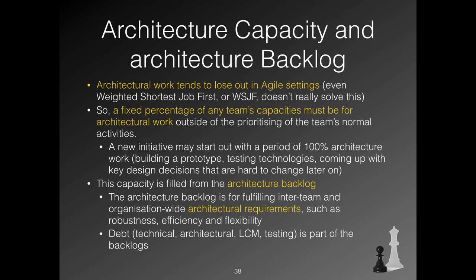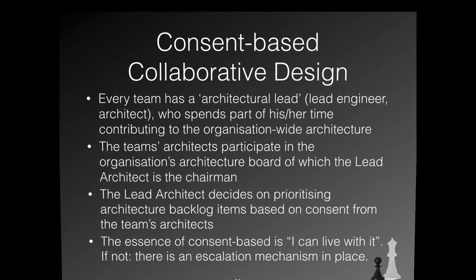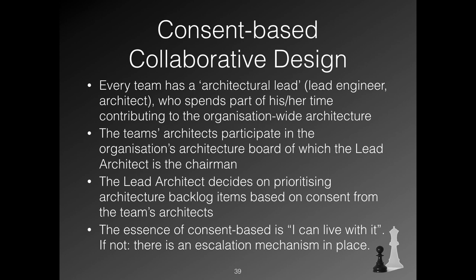As we all have experienced, prioritizing architecture in practice almost never works well. We need to set up a fixed architecture capacity in the teams that is filled from the architecture backlog in collaboration between product owner and lead architect. Architecture is not what is done by architects only — everything the team creates that is hard to change is architecture. A new initiative may start with 100% architecture work, so the way to do that is generally not to write designs, but to build designs and implement them in agile spikes.